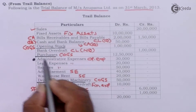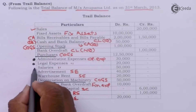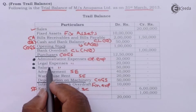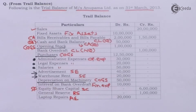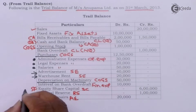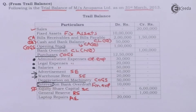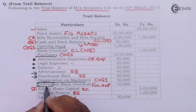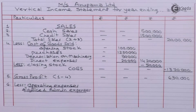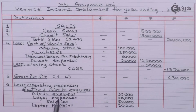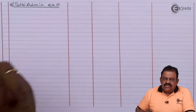Operating expenses include: administrative expenses, legal expenses, salaries — all part of administrative expenses — and laptop repairs also under administrative expenses. Advertisement is a selling expense and warehouse rent is a selling expense. Interest on bank overdraft will be deducted separately after calculation of operating profit. Total administrative expenses: 1 lakh 20,000.